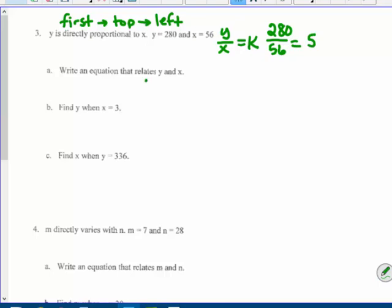So my equation. Write the equation. Y equals five x. Find y when x is three. So y equals five times three. So that would be fifteen.